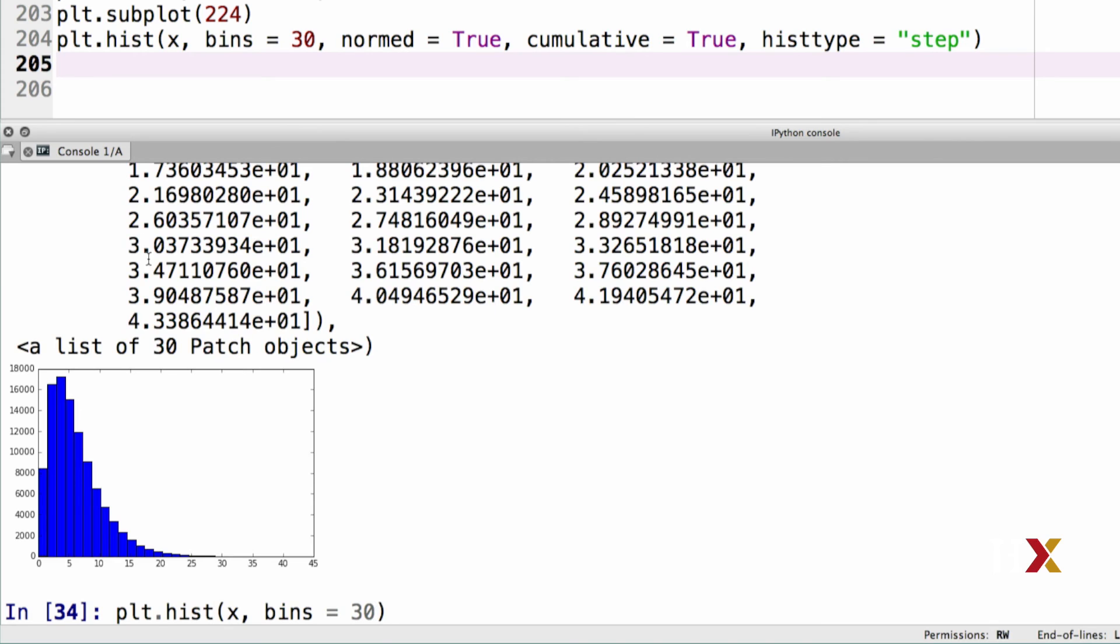If we'd like to normalize this histogram, we can use the keyword argument normed, and we set that to be equal to true. In this case, the histogram will be normalized.